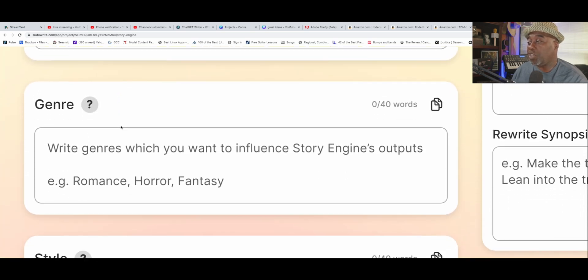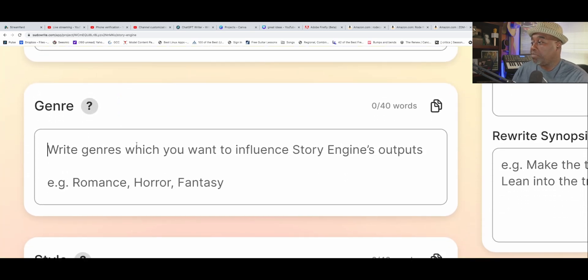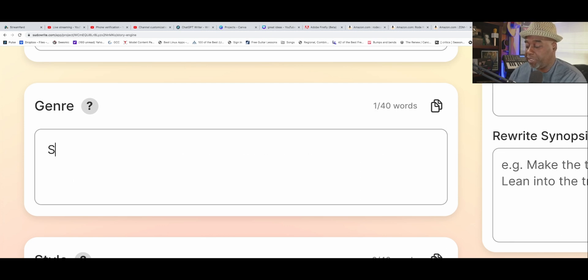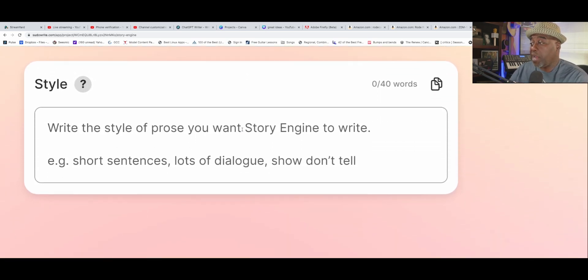Then you've got what genre you're in, and you say something like sci-fi. Sometimes the best way to do that is sci-fi. Let's call it sci-fi action. That way, it gives it a cue of what it's going to be writing.